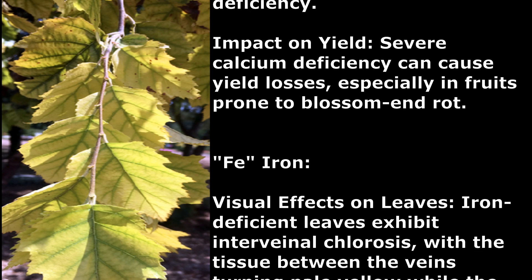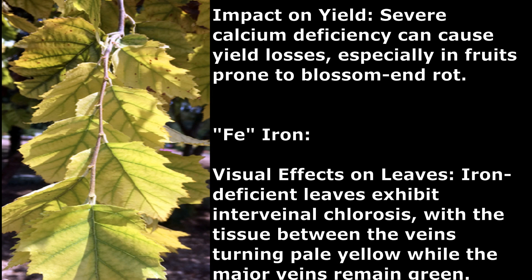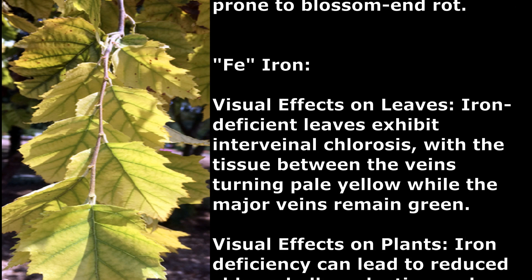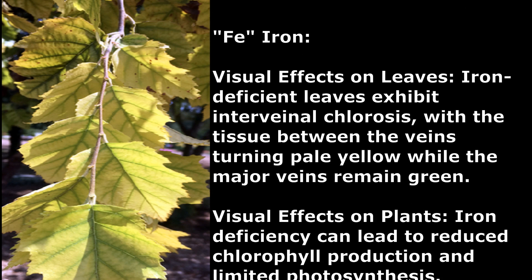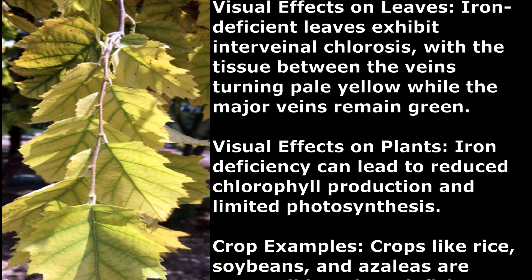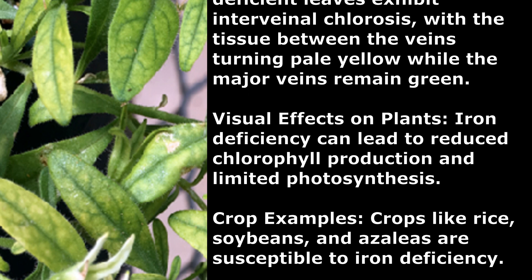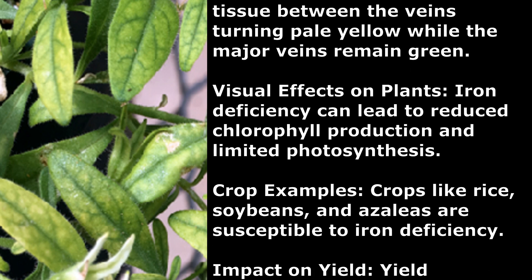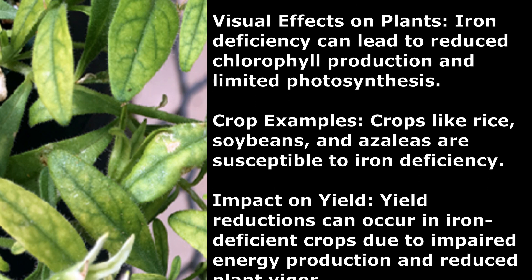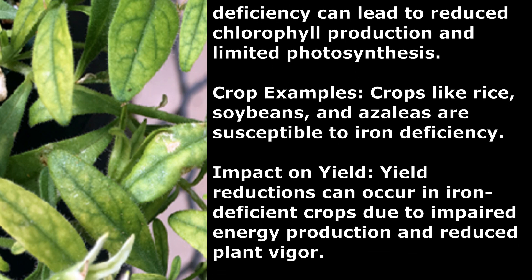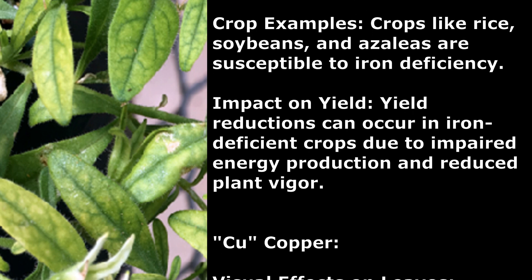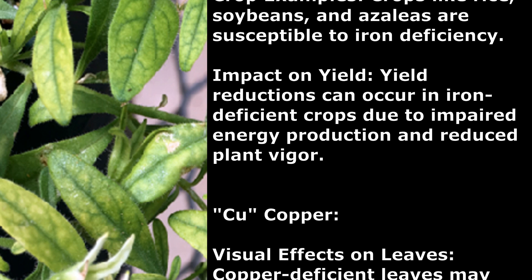Iron. Visual Effects on Leaves: Iron-deficient leaves exhibit interveinal chlorosis, with the tissue between the veins turning pale yellow while the major veins remain green. Visual Effects on Plants: Iron deficiency can lead to reduced chlorophyll production and limited photosynthesis. Crop Examples: Crops like rice, soybeans, and azaleas are susceptible to iron deficiency. Impact on Yield: Yield reductions can occur due to impaired energy production and reduced plant vigor.